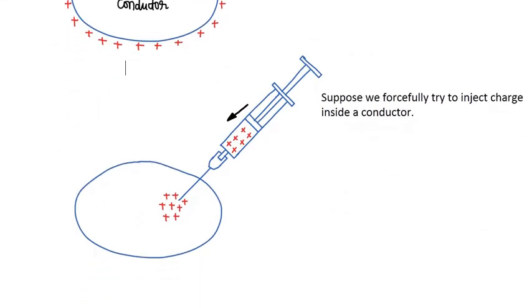Suppose we forcefully try to inject charge inside the conductor. This is a hypothetical diagram - a kind of syringe, hypothetical case only - and we inject positive charge inside the conductor.